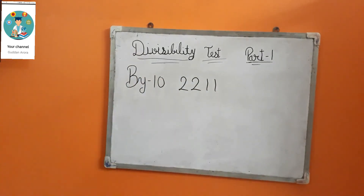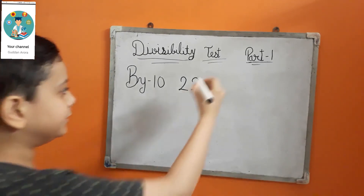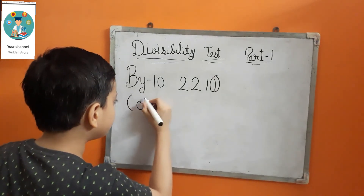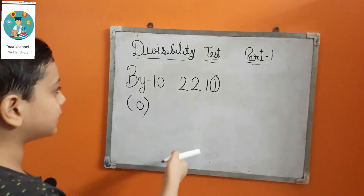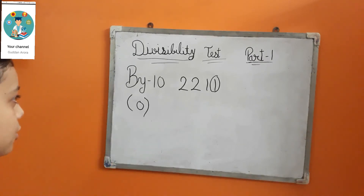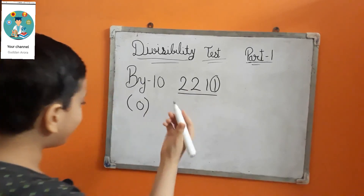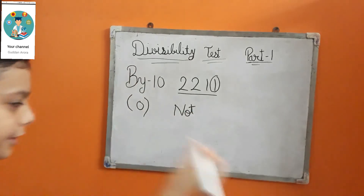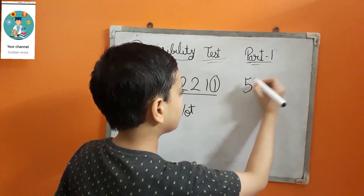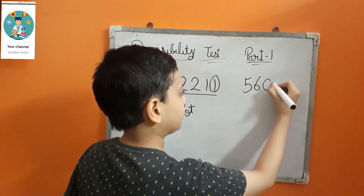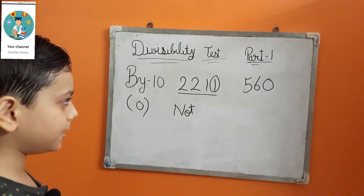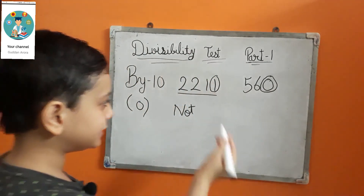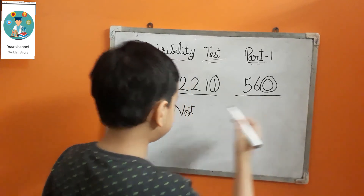Now we will discuss divisibility by 10. It is very simple. In divisibility by 10, we have to check if the ones digit is 0 or not. In this example, the ones digit is 1, so this number is not divisible by 10. In another example, the ones place is 0, so that number is divisible by 10.